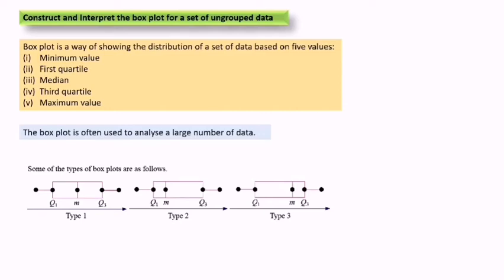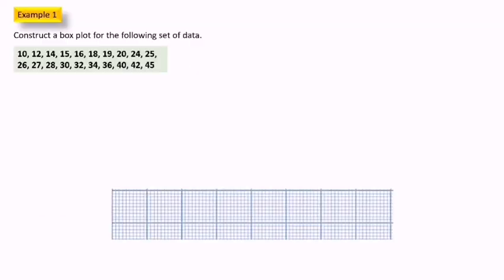Some of the types of box plots are as follows. Here we have three types of box plots. Now we are going to learn to construct a box plot for the following set of data.